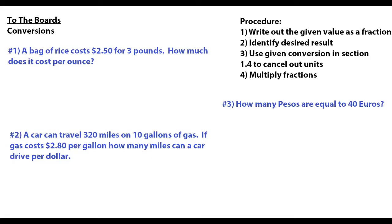Welcome back — it's time to practice some conversion problems. We have three problems for you to try. Follow these four steps: first, write out your given value as a fraction; second, identify your desired result; third, use the conversions from section 1.4 to set up fractions that cancel out the units; and fourth, multiply all the fractions together. Pause the video now and work through them.